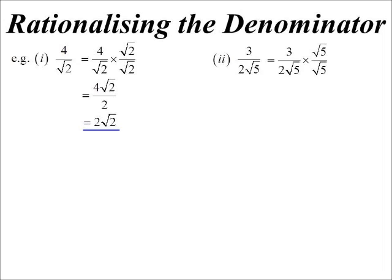It still works if you multiply by 2 root 5. It just means you'll end up with some cancelling later on, some more work to do. So root 5 on root 5. And so on the top we get 3 root 5. The bottom is 2 times 5, which is of course 10.